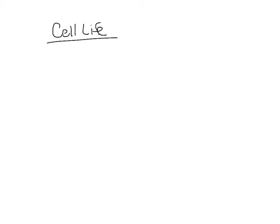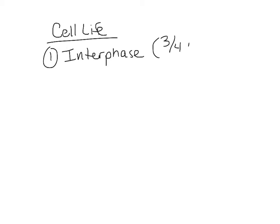Let's start by looking at the cell's life. When the cell is just living its life and doing its normal thing, that is called interphase. Interphase is not a part of mitosis — interphase is about three-quarters of the cell's life. So mitosis is a quarter of it, and interphase is three-quarters. Most of the time, if a cell can divide, it's just going to be in interphase doing its thing.